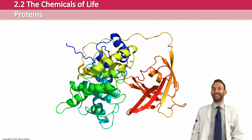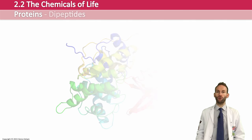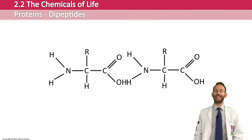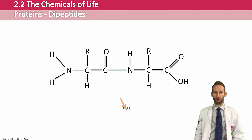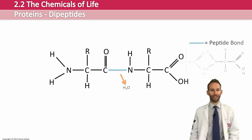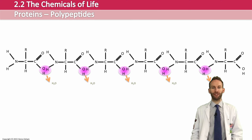Just like glycosidic and ester bonds, you can also form bonds using a condensation reaction to join two amino acids together. These are called peptide bonds in proteins. If you take two amino acids and perform a condensation reaction on them, then you will make a dipeptide, which will have a peptide bond, and water will be released because it's a condensation reaction. If you continue to do that many times, you will form a polypeptide — lots of condensation reactions joining lots of amino acids together.